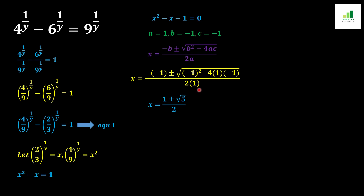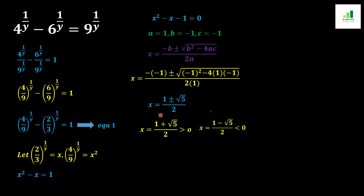Simplifying, minus of minus 1 gives plus 1, and under the square root we get 1 plus 4 equals 5, with denominator 2 times 1 equals 2. So we get two values for x: the first is x equals (1 plus square root of 5) over 2, which is greater than 0; the second is x equals (1 minus square root of 5) over 2, which is less than 0. Since the base of a power must be positive, the second value is not acceptable, so we continue with the first value only.